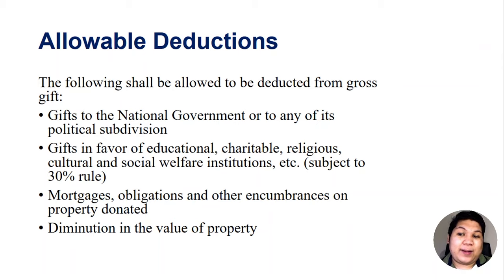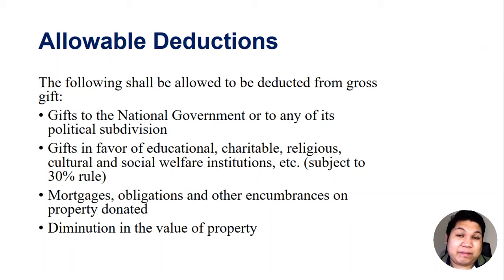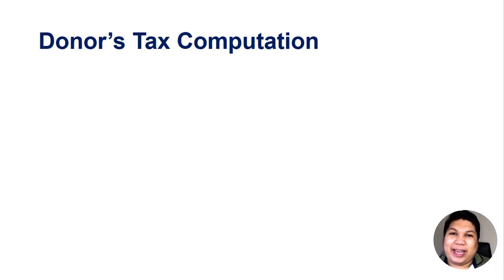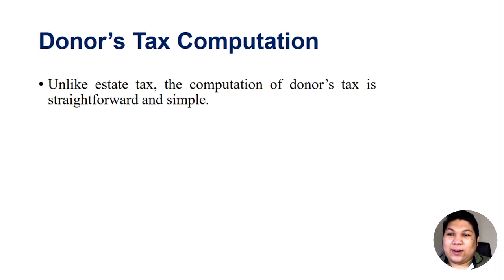Before the TRAIN law, there was actually another deduction — the dowry — which is no longer allowed; it was already repealed by the TRAIN law. So let's now discuss how to compute donor's tax. It's actually plain and simple. Unlike estate tax, the computation of donor's tax is straightforward and simple — you don't have to memorize complicated rules about absolute community or conjugal partnership of gains.